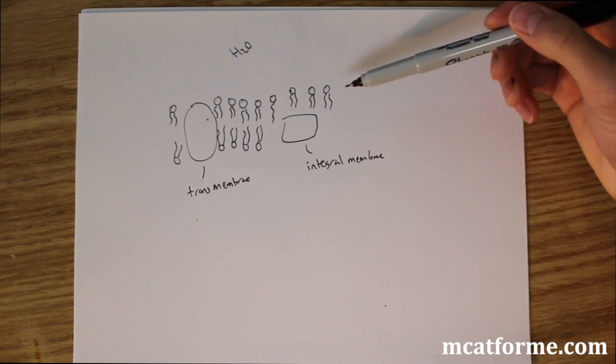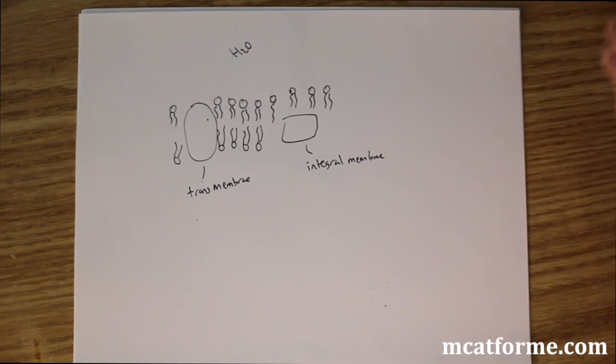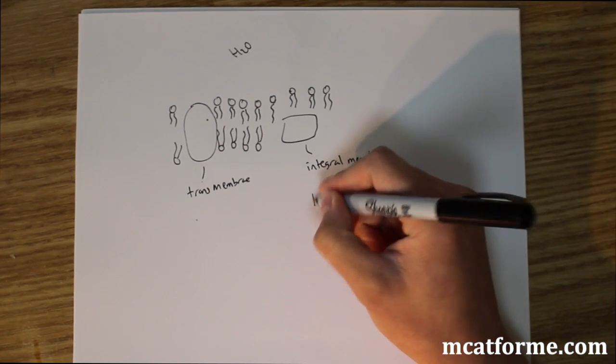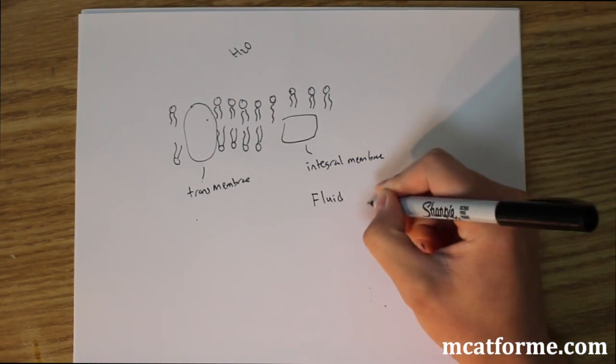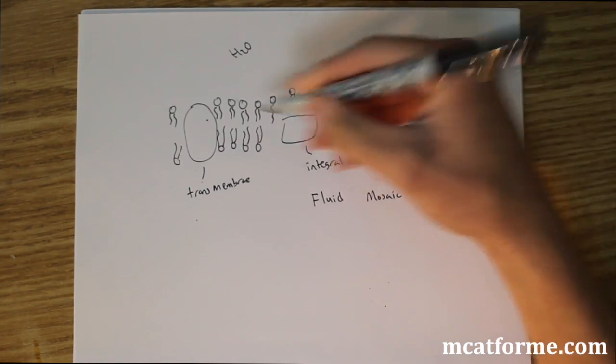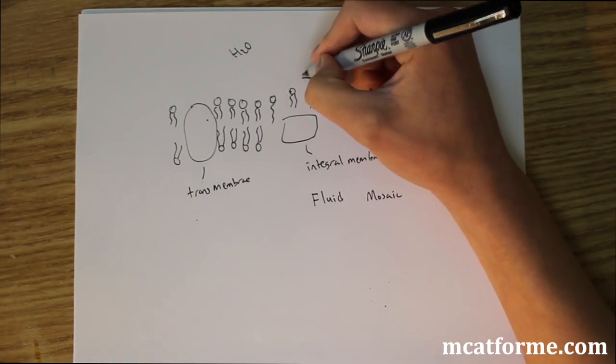So now that we see all these phospholipids and the cholesterol and the proteins working together. How does that work? And it's something called the fluid mosaic model. And what that says is that these phospholipids are allowed to move laterally. So they're allowed to move left and right.